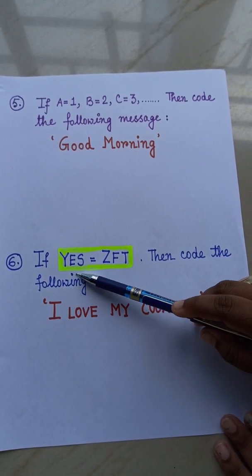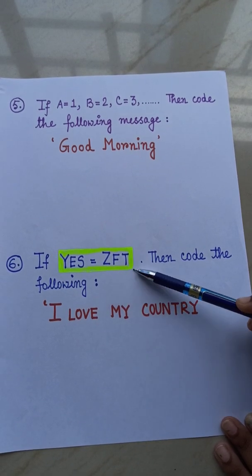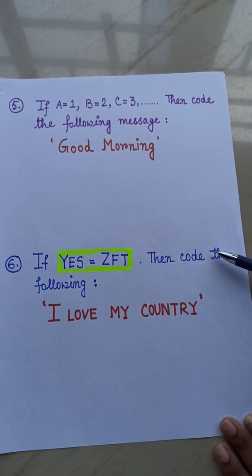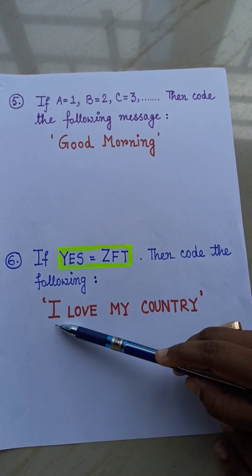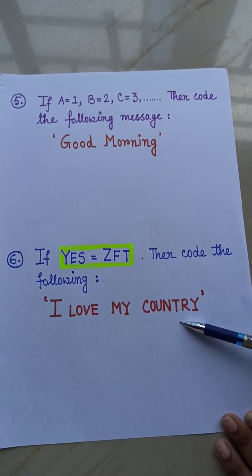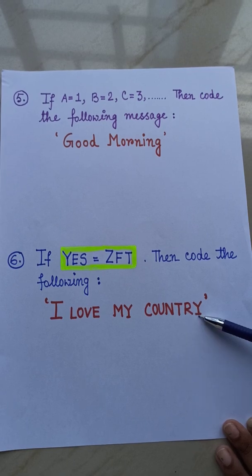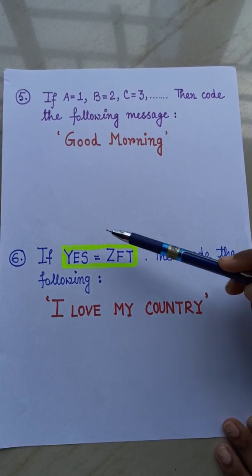So, if Y, E, S equals to Z, F, T, then you have to code the message. The message is, I love my country.